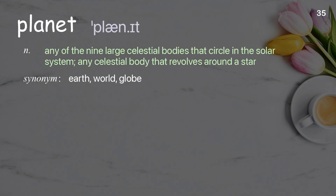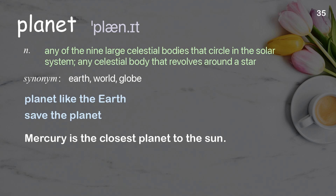Planet: Any of the nine large celestial bodies that circle in the solar system; any celestial body that revolves around a star. Examples: Planet like the earth. Save the planet. Mercury is the closest planet to the sun.